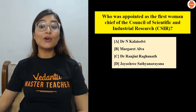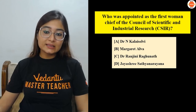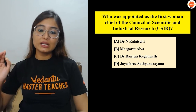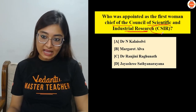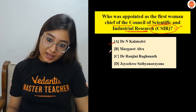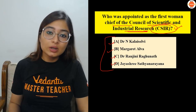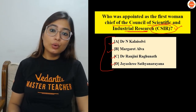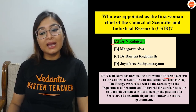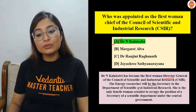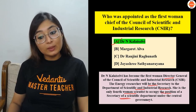Next question: Who was appointed as the first woman chief of the Council of Scientific and Industrial Research (CSIR)? Options: Dr. N. Kalai Selvi, Margaret Alva, Dr. Ranjini Raghunath, or Jayshri Satyanarayana. The correct answer is Dr. N. Kalai Selvi. She became the first woman Director General of CSIR. The energy researcher will also serve as Secretary to the Department of Scientific and Industrial Research. She is only the fourth woman scientist to occupy the position of Secretary of a scientific department under the Central Government.